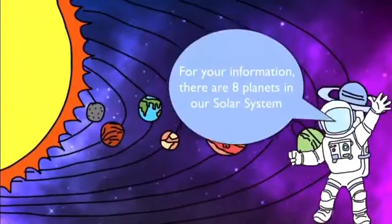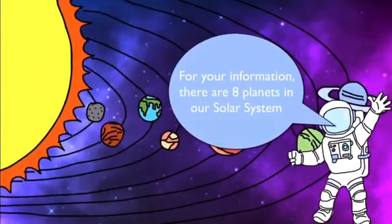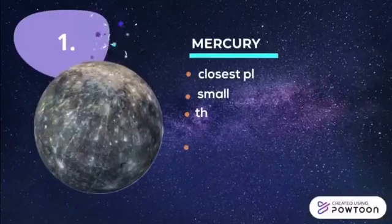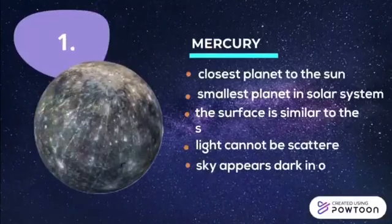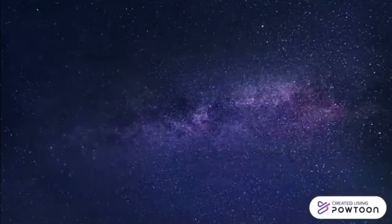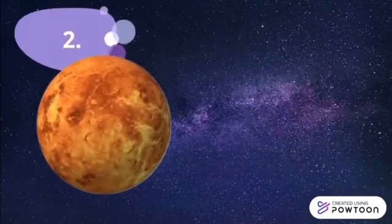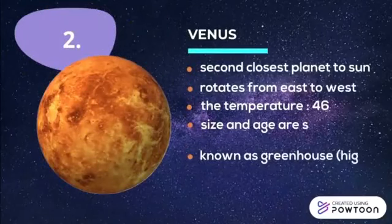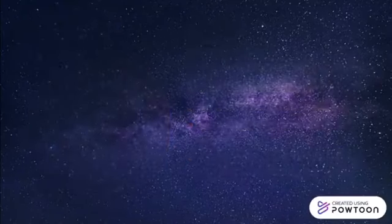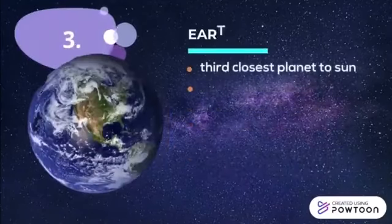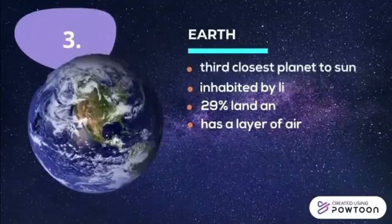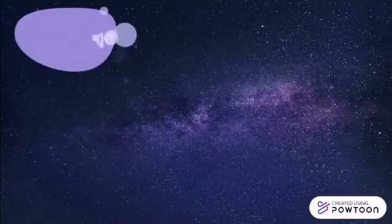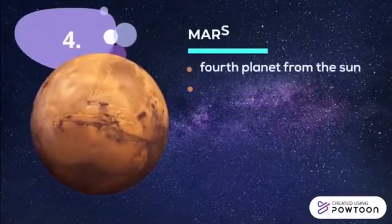For your information, there are 8 planets in our solar system. The closest planet to the sun is Mercury. The second is Venus. Next to it is our beloved Earth. And the fourth one is Mars.